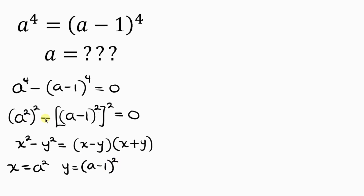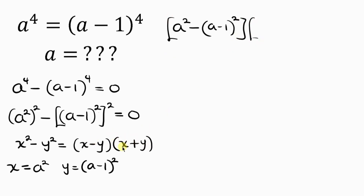So let's write this difference of two squares. The first bracket is x minus y: x is A squared, minus y which is A minus 1 squared. Times the second bracket, x plus y: x is A squared, plus y which is A minus 1 squared. Equal to 0.